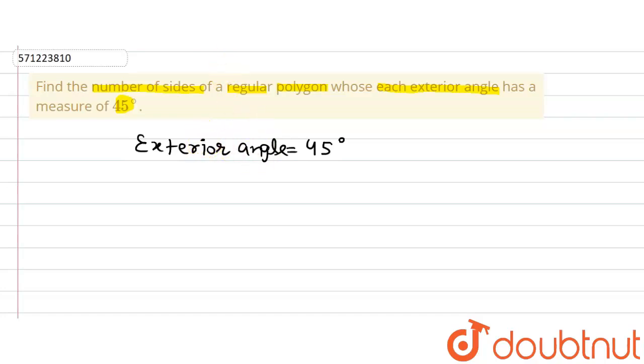So we know that in a regular polygon the number of sides is equal to 360 degree divided by measure of each exterior angle.